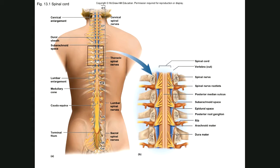Number three is locomotion — the spinal cord is very important for movement of your body. A person who suffers spinal cord injury or destruction of the spinal cord will begin to suffer a condition known as paralysis. And lastly, reflexes — the spinal cord is very important for reflexes, and we'll take a closer look at reflexes at the end of today's discussion.